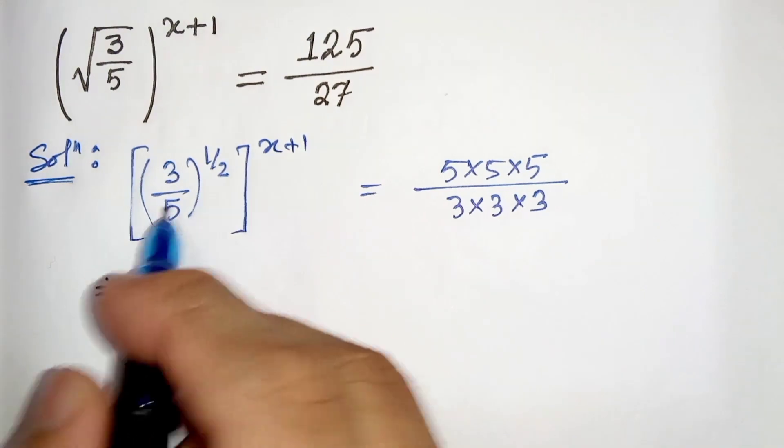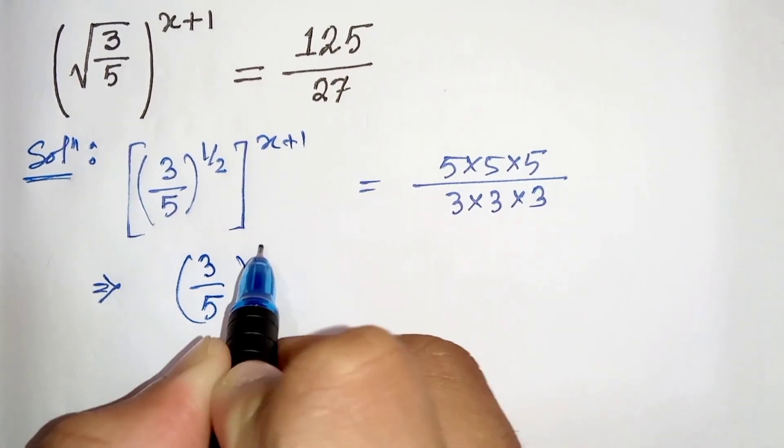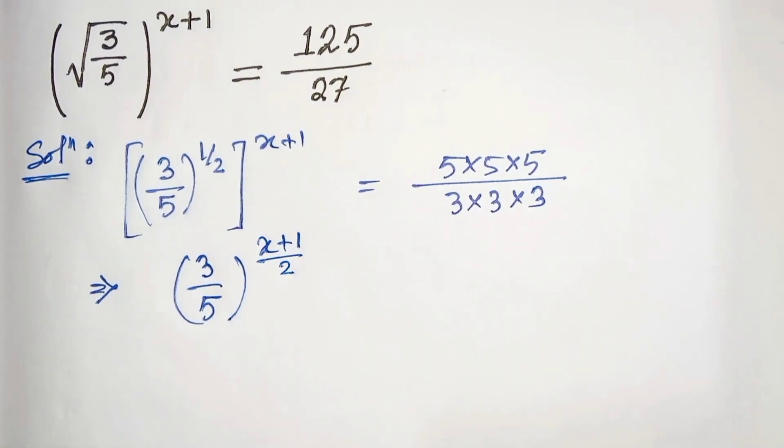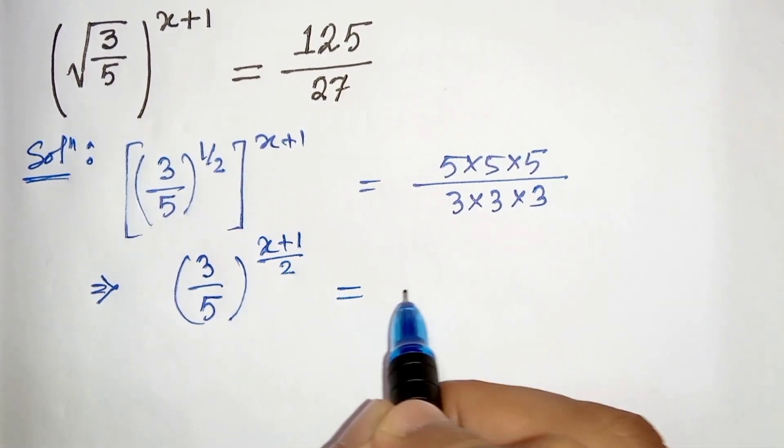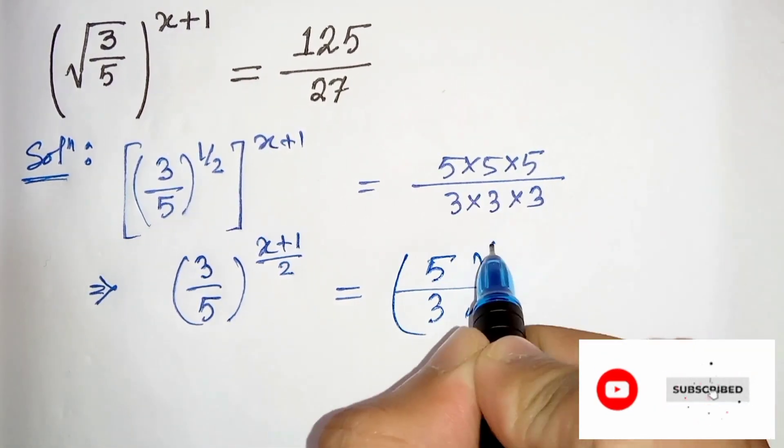In the next step we can write this as 3 by 5 whole to the power x plus 1 divided by 2. From here we can write 5 divided by 3 whole to the power 3.